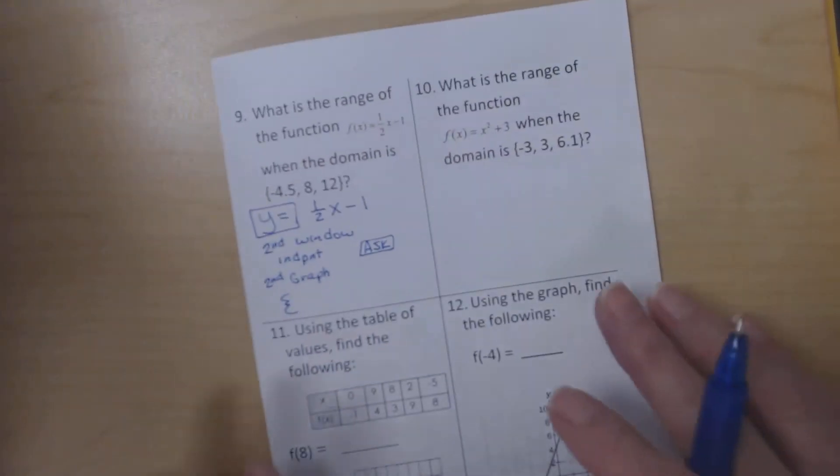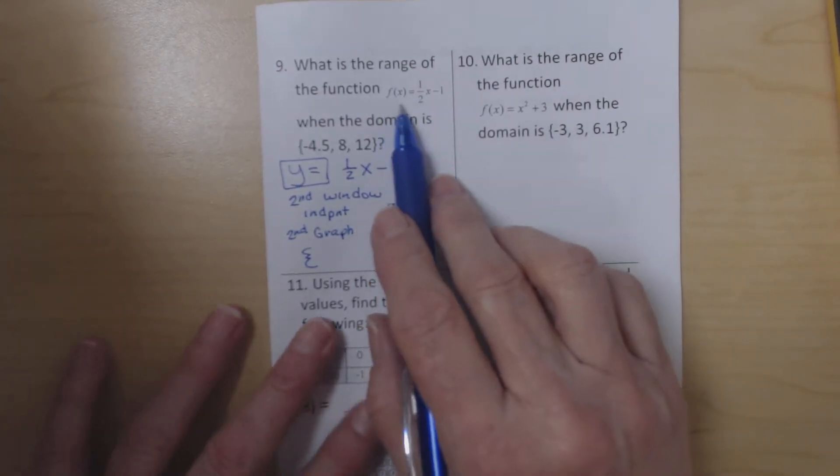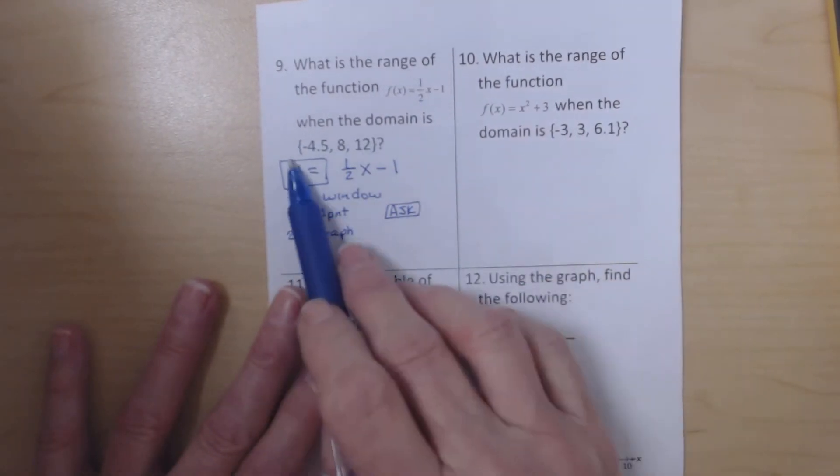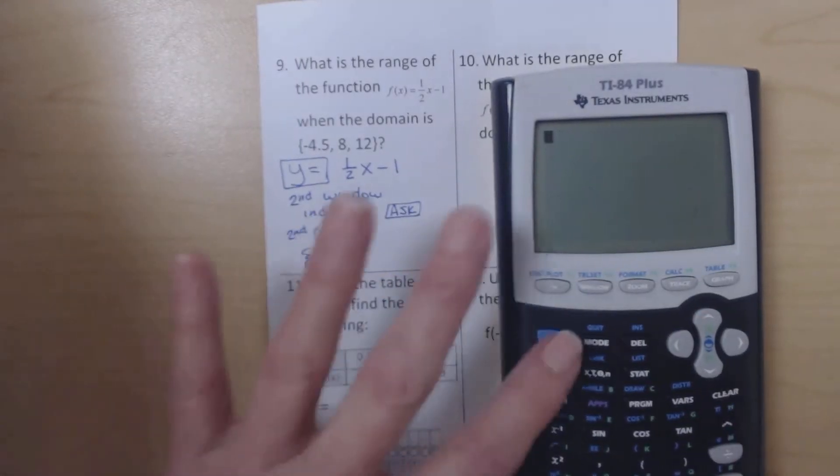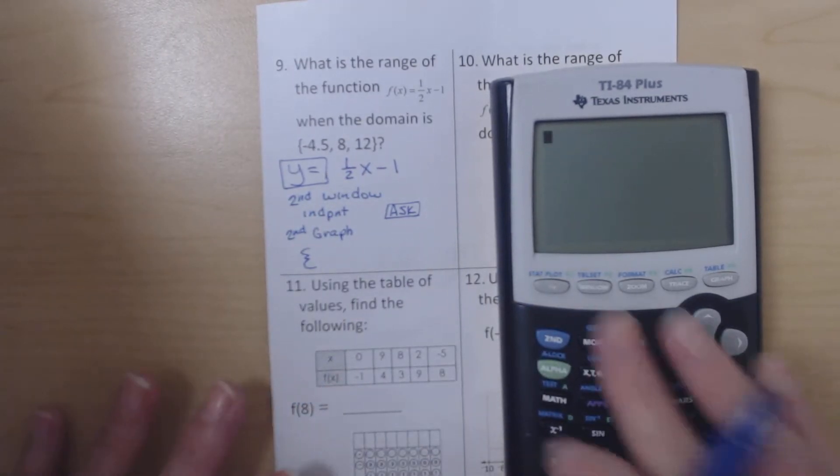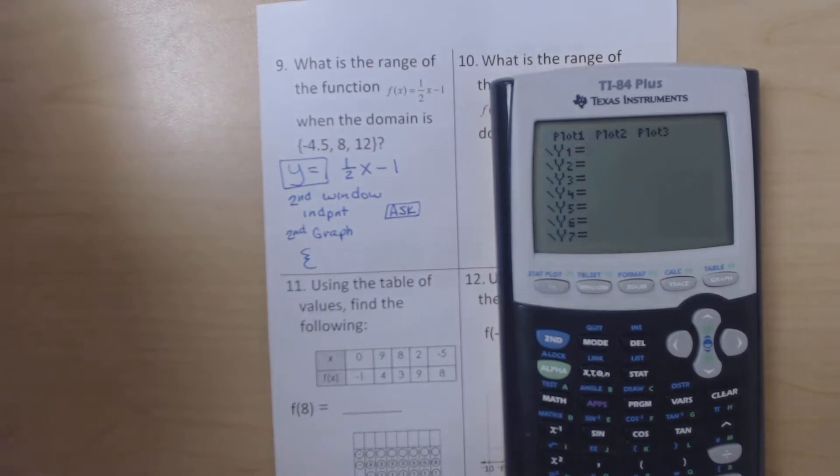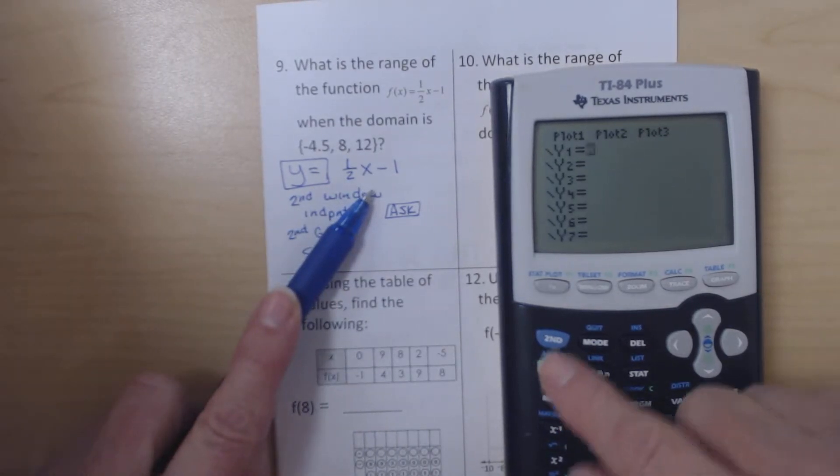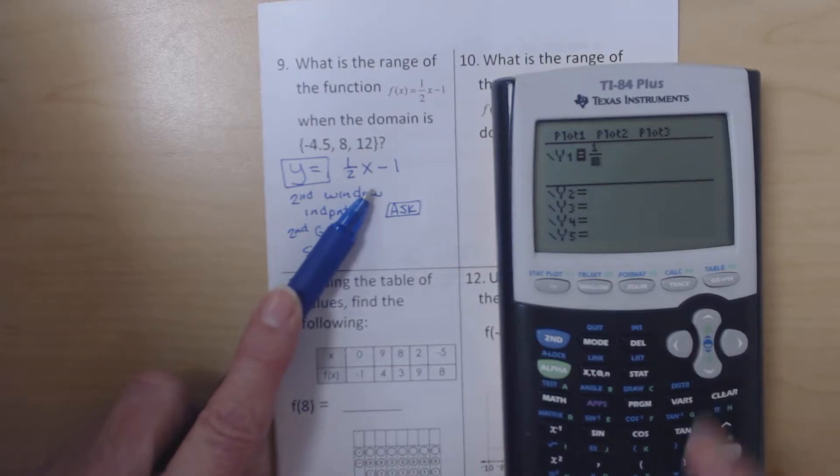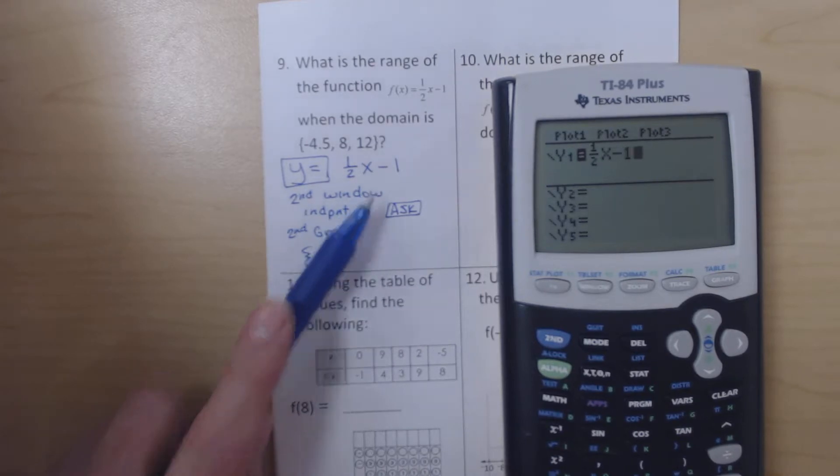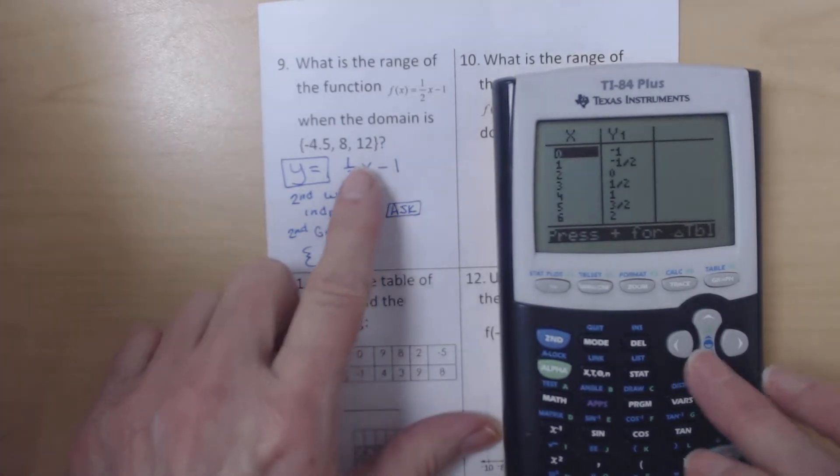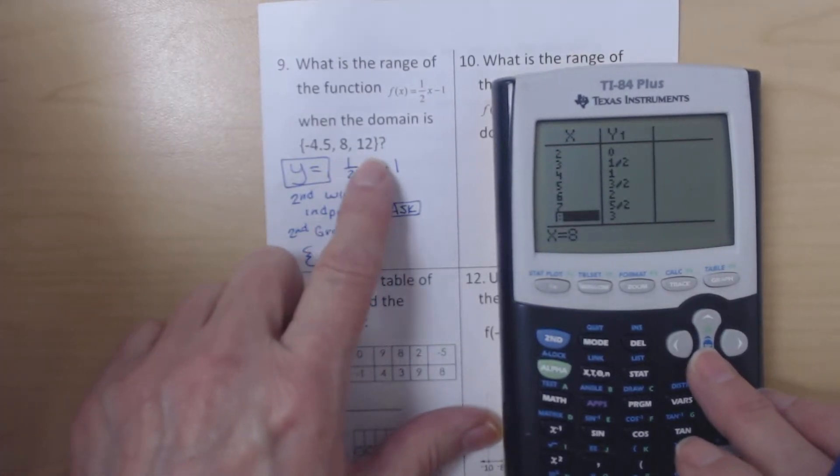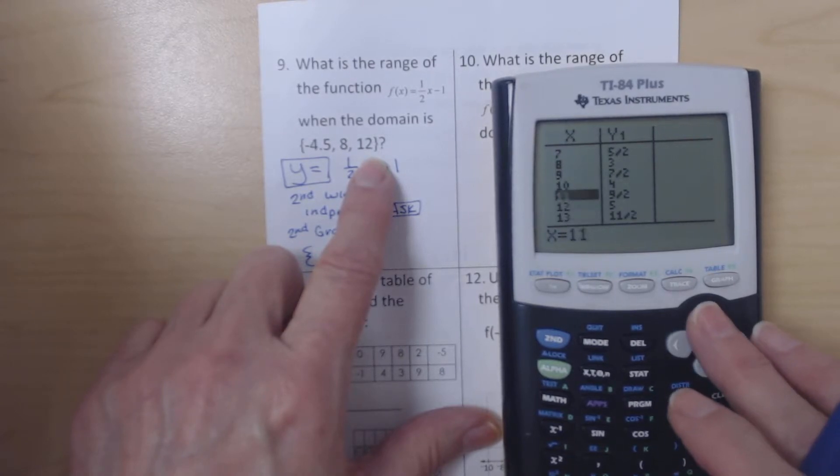On the next page it says what is the range of the function f(x) equals (1/2)x minus 1 when the domain is -4.5, 8, and 12. So I'm going to completely clear the calculator. We're going to go to y equals and have the calculator help us. I need to enter in the function. So I'm going to do alpha y equals to get my skeleton for the fraction. So we have (1/2) times x minus 1. At this point I could just go ahead and look at the table of values and from there I could figure out what 8 is and I can figure out what 12 is by just looking at the table of values.